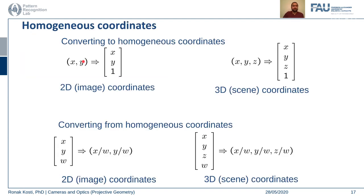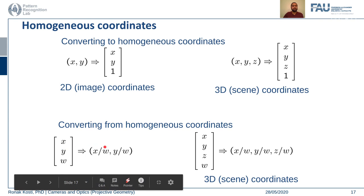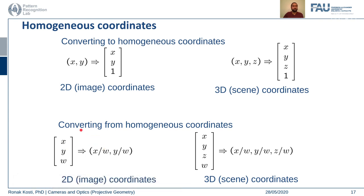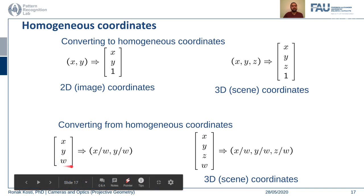Similarly in 3D, a point (x, y, z) becomes (x, y, z, w). If objects are far away they appear smaller in perspective projection — w varies with z, the depth of the real world. Homogeneous coordinates are also called projective coordinates. To convert 2D image coordinates to homogeneous coordinates you simply pad a 1 to the vector; to convert back, you divide the first two values by the third. Similarly in 3D, you divide all three values by w.